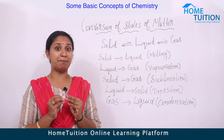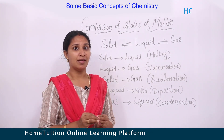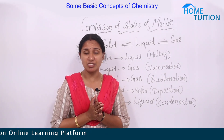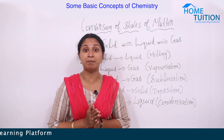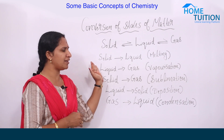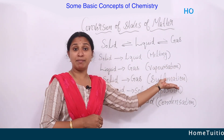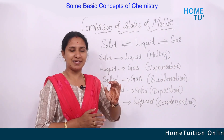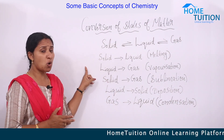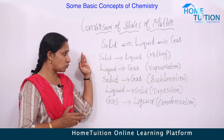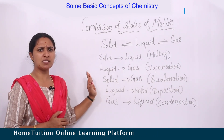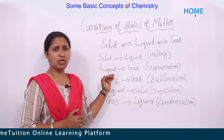The melting point is the temperature at which a solid melts, or the temperature at which the liquid pressure becomes equal to the vapor pressure. The melting point of ice is 0°C. The conversion of liquid to gas is called vaporization — for example, water boils and vaporizes at 100°C.